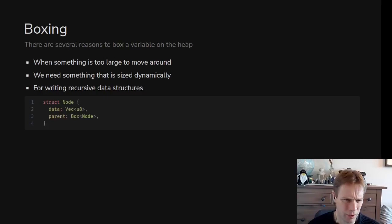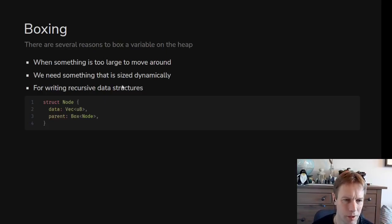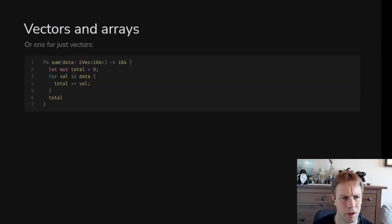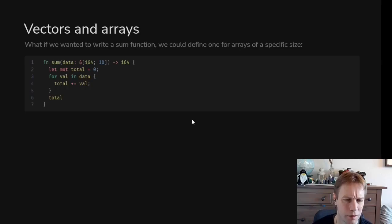So the reasons for wanting a Box are: something's big so it'd be really slow to move around; you don't know what size it is at compile time; or in particular, you want a recursive structure where you point to an instance of yourself.